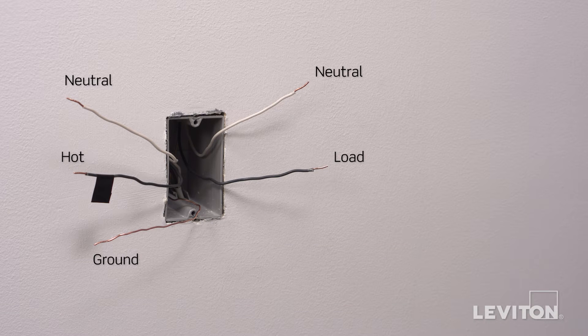Note that in this example, there is a black hot line wire, a black load wire, two white neutral wires, and a bare copper wire which is the ground. Keep in mind, the color of the wires can vary.